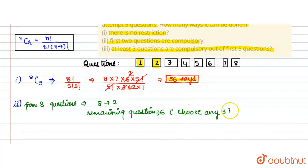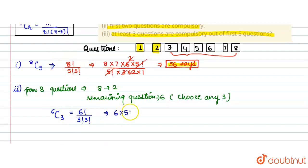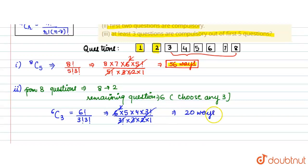Choose any 3 from the remaining 6 questions. So the answer for part (ii) is 6C3 = factorial 6 upon (factorial 3 into factorial 3) = (6 × 5 × 4 × 3!) / (3! × 3 × 2 × 1). The 3! cancels, 3 × 2 = 6 cancels with 6, giving 5 × 4 = 20. So there are 20 ways for the student to attempt the paper when the first 2 questions are compulsory.